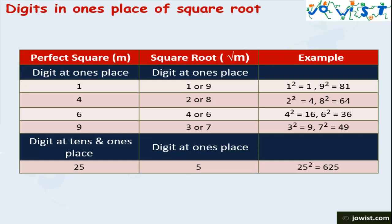Let's understand with examples. The square of 1 is 1 and the square of 9 is 81 — both numbers have 1 in their 1's place. For the number 4: if a perfect square number has 4 in its 1's place, then its square root will have 2 or 8 in its 1's place. The square of 2 is 4 and the square of 8 is 64 — both have 4 in their 1's place.